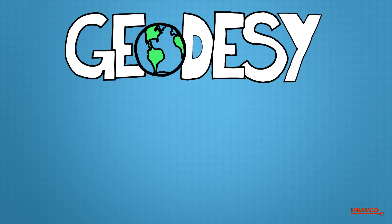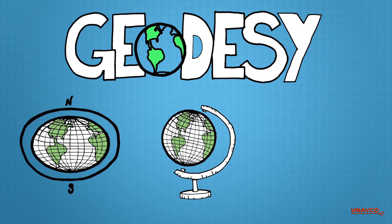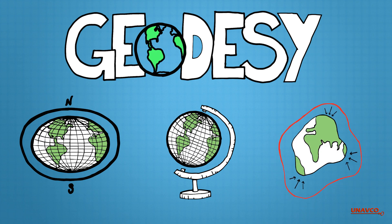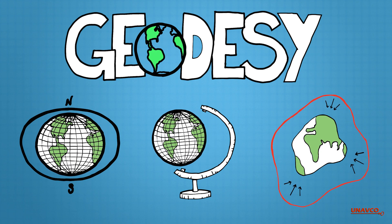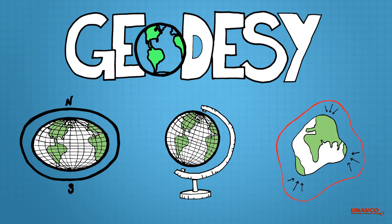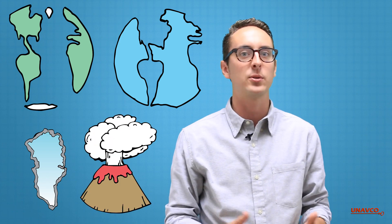Geodesy is a field of science concerned with measuring three properties of Earth: its shape, its orientation in space, and its gravity field. These properties change over time, so it's important that scientists are keeping tabs on Earth's overall position, as well as the position of its major parts, such as continents, oceans, ice sheets, volcanoes, and more.